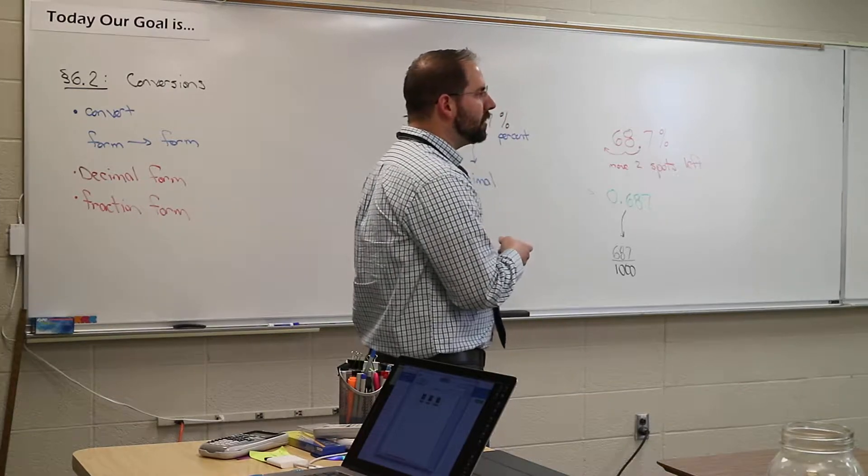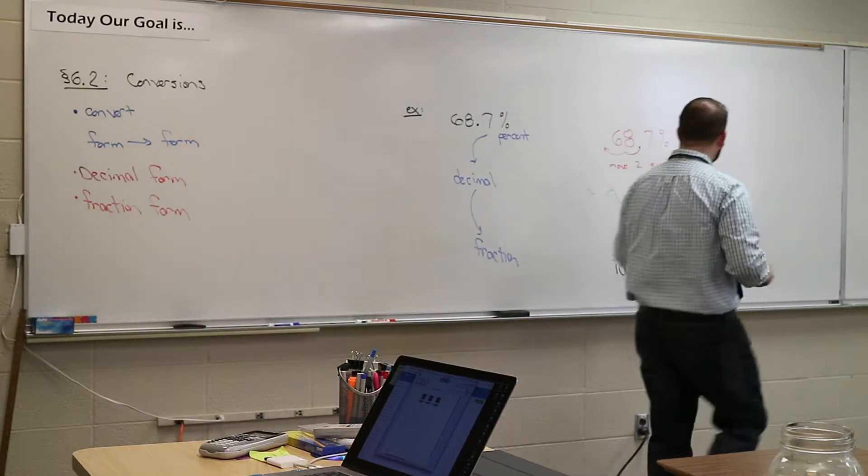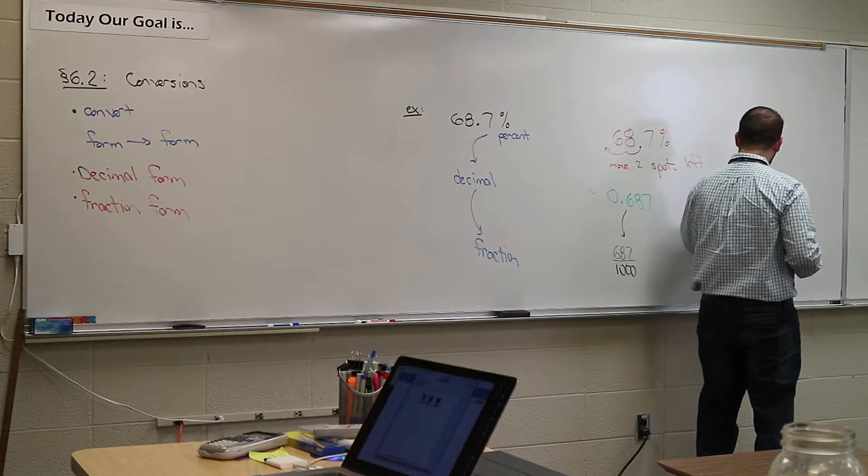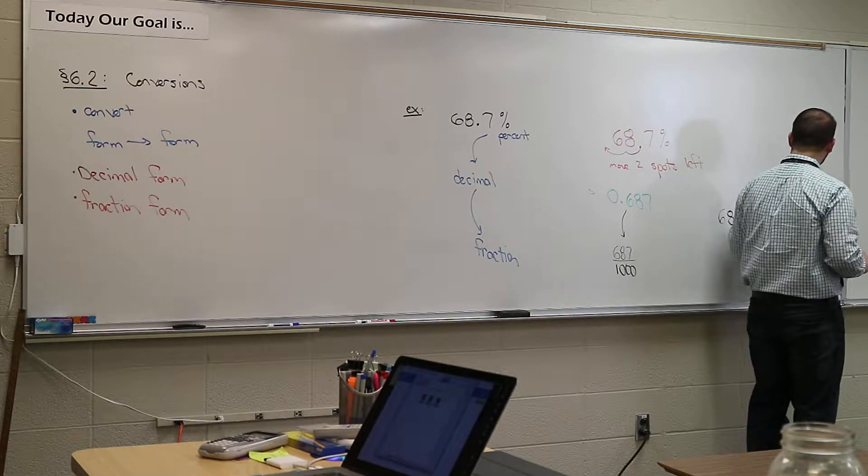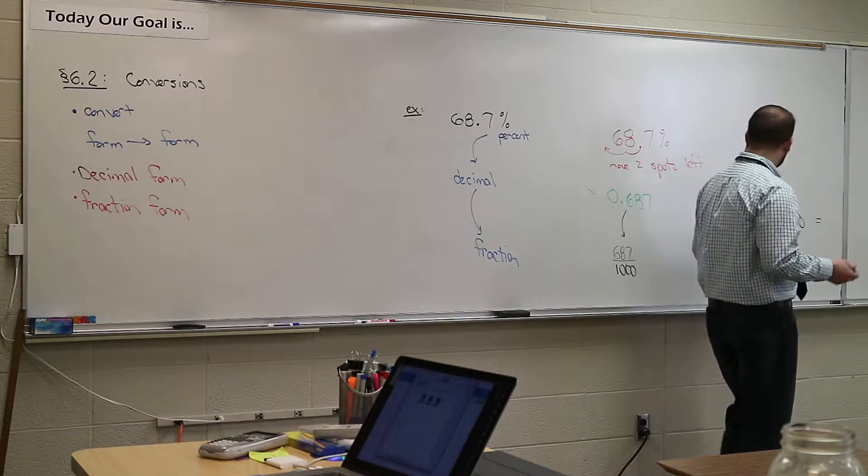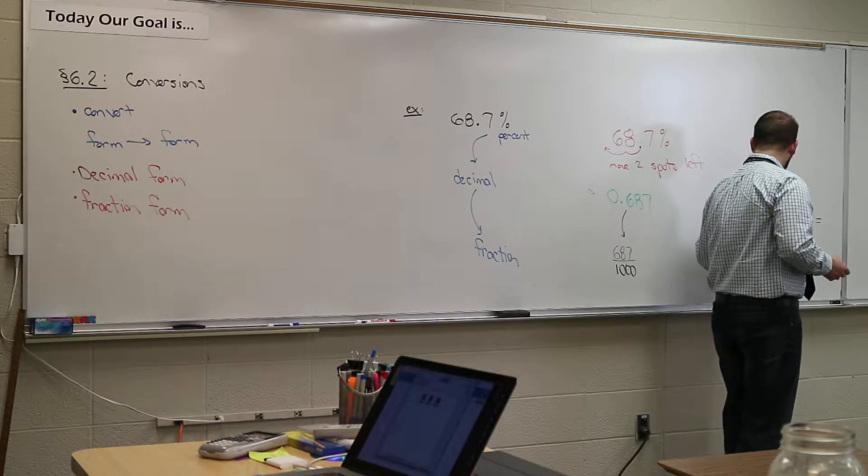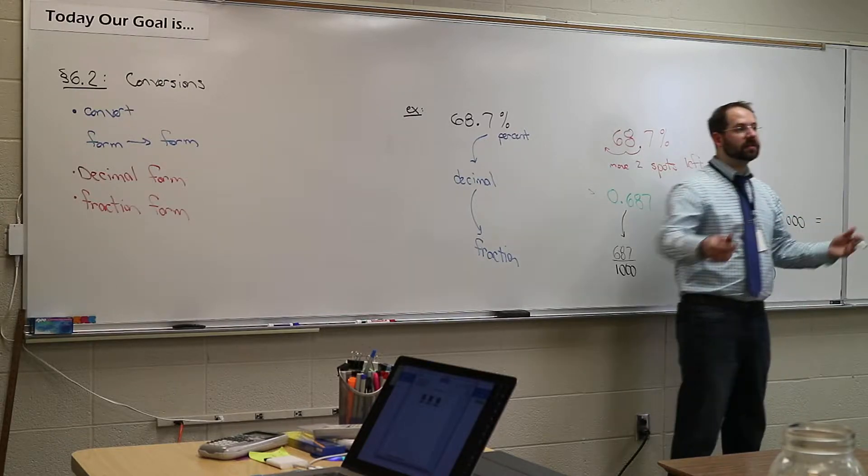I'd like you to type that fraction in your calculator. Type in six, eight, seven. Hit the little ABC button. And then type in the 1,000 and hit equal. I'm assuming it doesn't look like it just gives you the same fraction. Gave you the same fraction, right? It didn't even simplify it. You can't simplify it. The calculator could not simplify that.